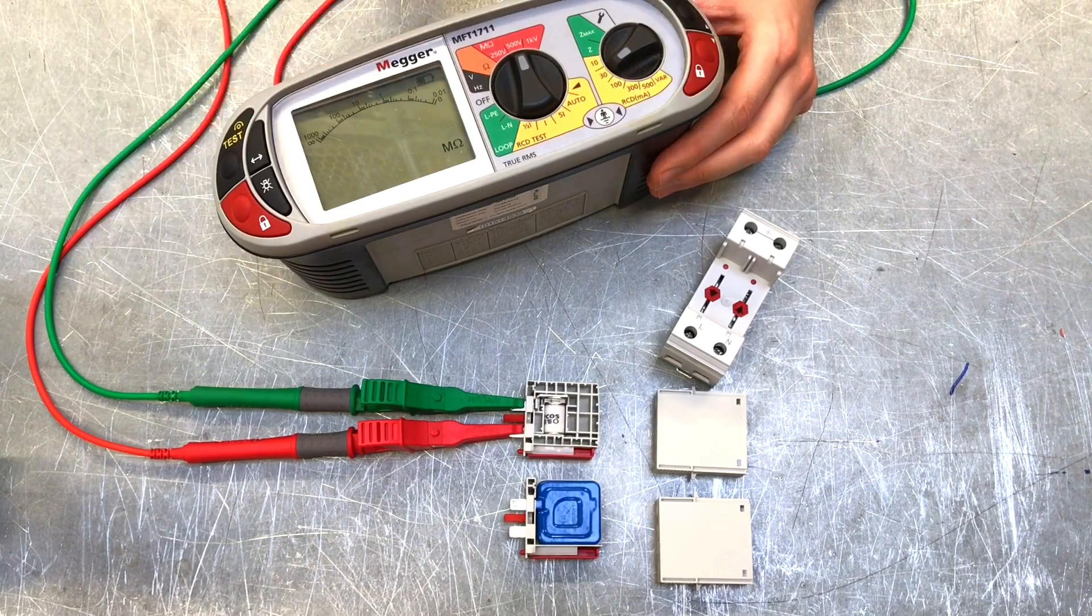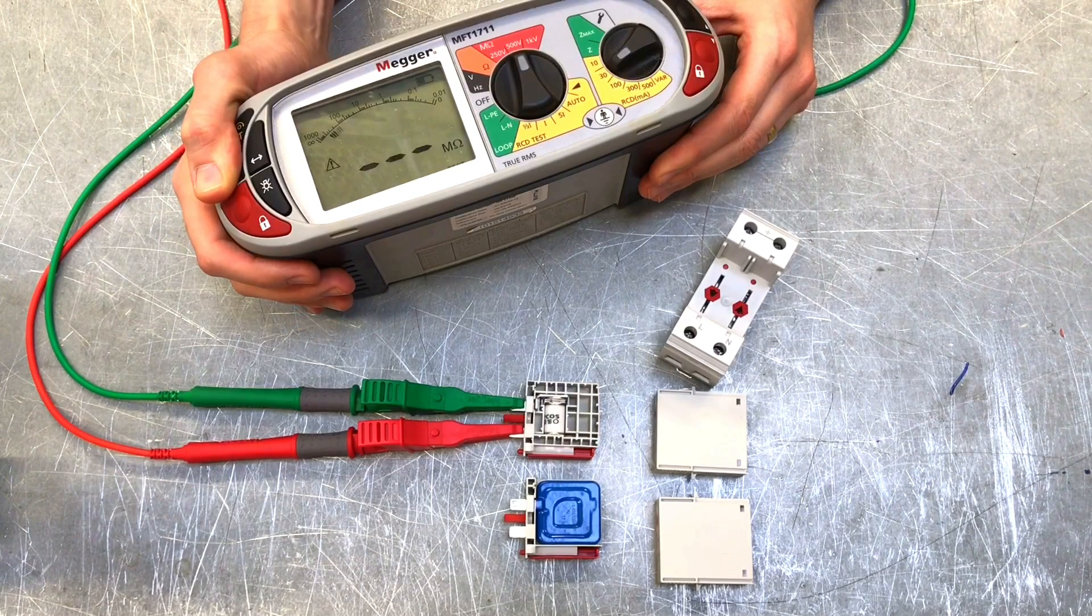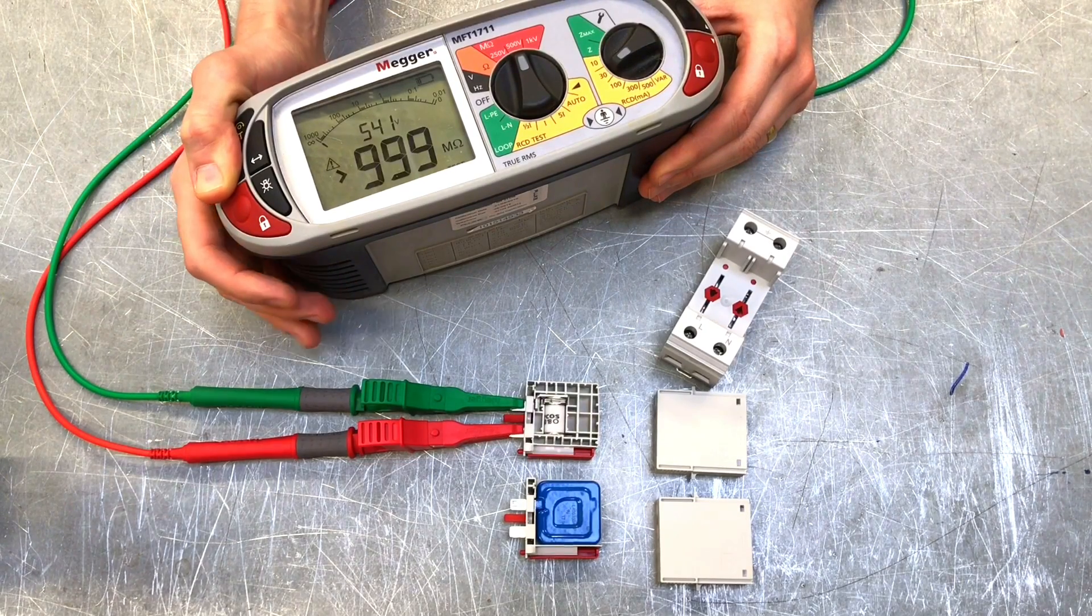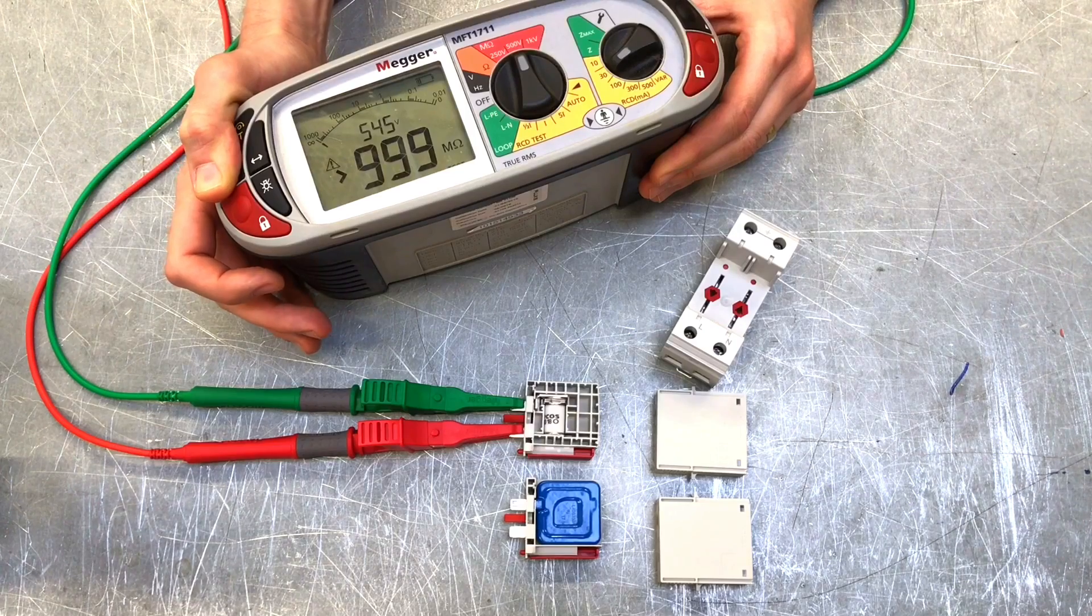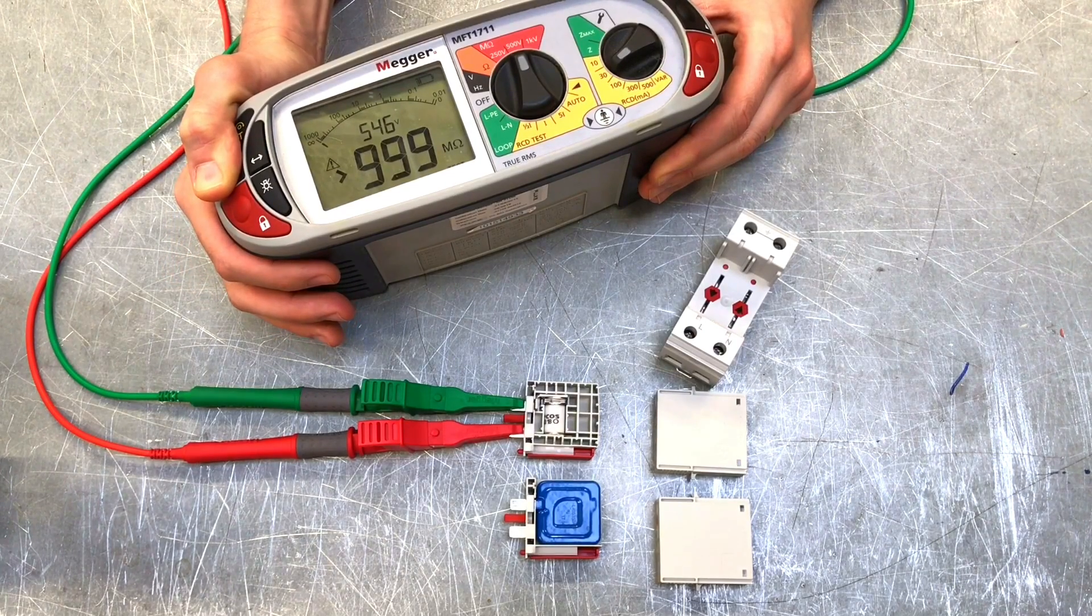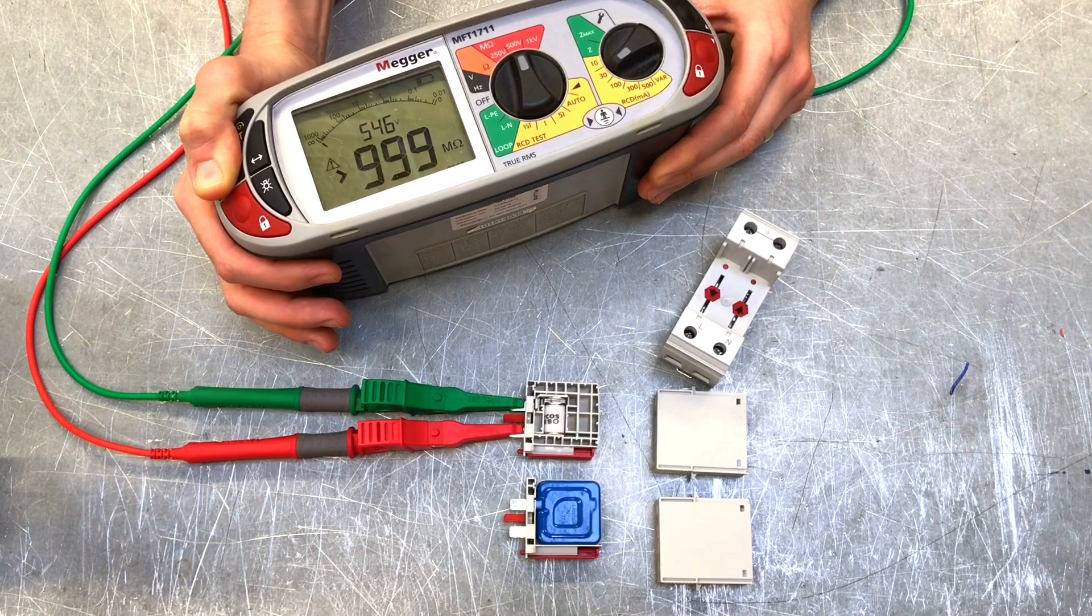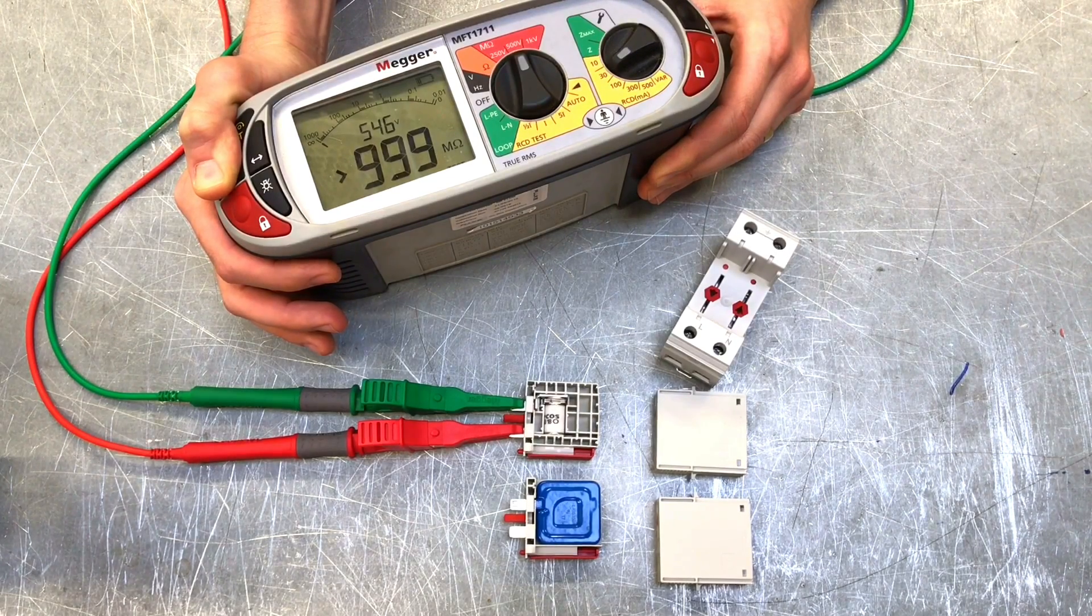So once again, we're above the nominal voltage values. Now that's interesting in this case because this is slightly different technology. We're using a gas discharge tube instead of the varistor. You can see there that actually we've still got a very, very high reading even though we've gone above the nominal voltage.